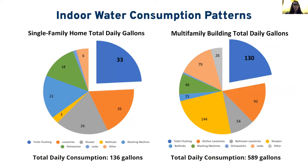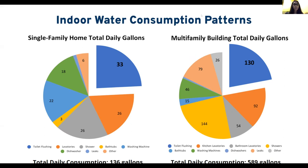Now we have indoor water consumption patterns for both dwellings. The pie charts show consumption broken down by the various household uses, and the highest demand was found in toilet flushing for both the single-family home at 33 gallons and the multi-family building at 130 gallons daily. Total daily indoor consumption, excluding yard water usage, adds up to 136 gallons daily in the single-family home and 589 gallons daily in the multi-family building.